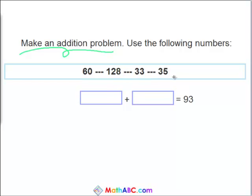Now which of these two numbers added together would equal 93? Yes, the 33 plus the 60 equals 93.